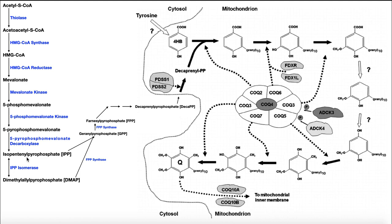The first thing we have to do is build the isoprenoids. The two basic building blocks of isoprenoids are: number one, isopentanyl pyrophosphate, or IPP; and then dimethylallyl pyrophosphate, or DMAP.